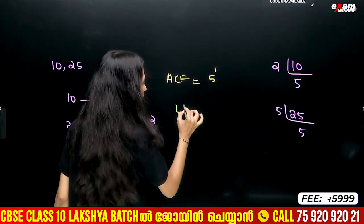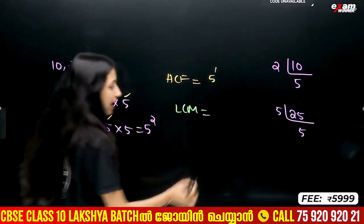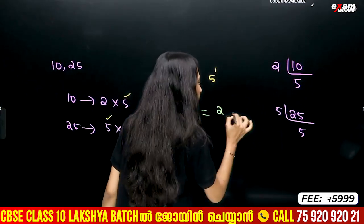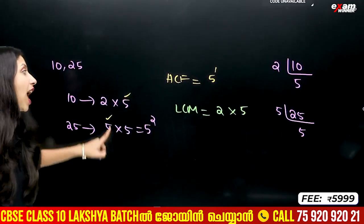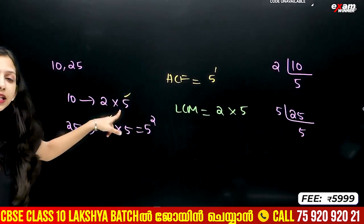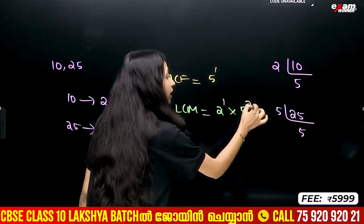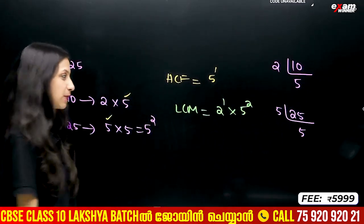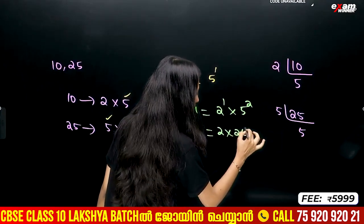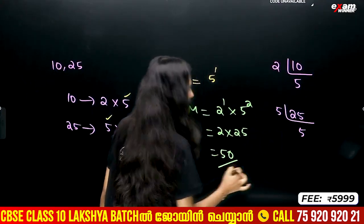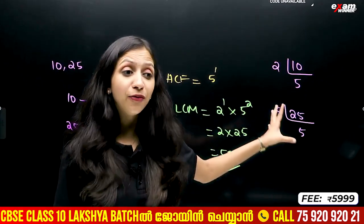If we have factors 2 and 5, the whole prime factor product uses the highest power. For 2, the highest power is 1. For 5, the highest power is 5 squared. So 2 into 25 is 50. LCM of 10 and 25 is 50.